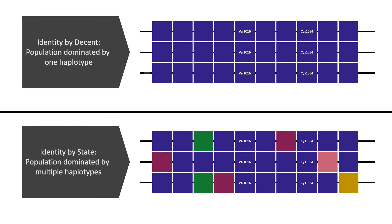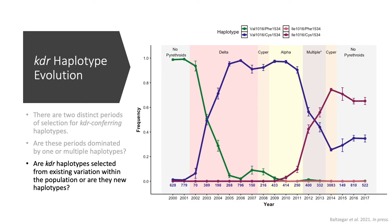By adding loci to our haplotypes, we can determine if the 1016-1534 resistance allele combinations are identical by descent or identical by state. If they are identical by descent, the other loci genotyped and added to the haplotype will be similar among individuals. If instead multiple haplotypes containing the 1016-1534 resistance allele combinations are observed, we can conclude that the haplotypes are identical by state. This information will also help us address whether KDR haplotypes are selected from existing variation within a population or if they are novel haplotypes. If the haplotypes are new, we would expect less variation among individuals, whereas we would expect more variation if resistance was selected from within the population.